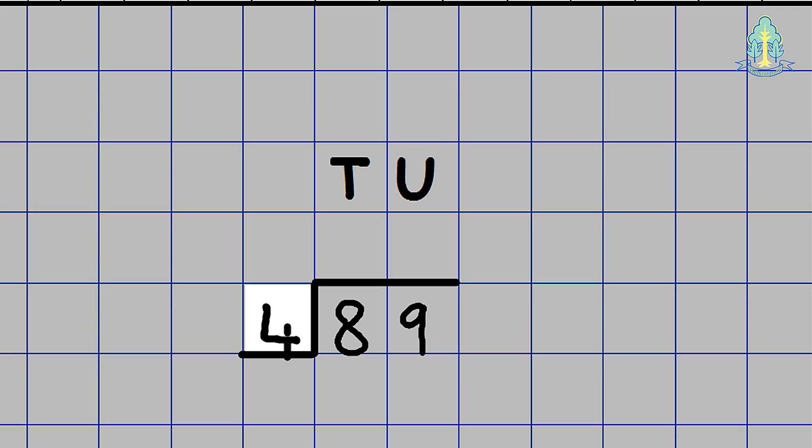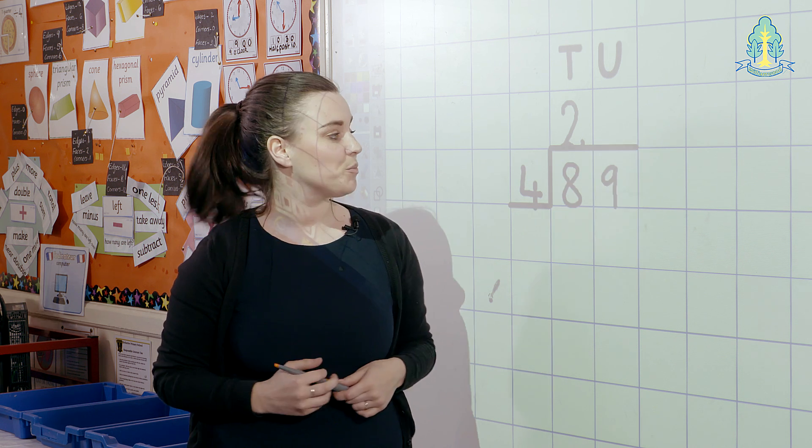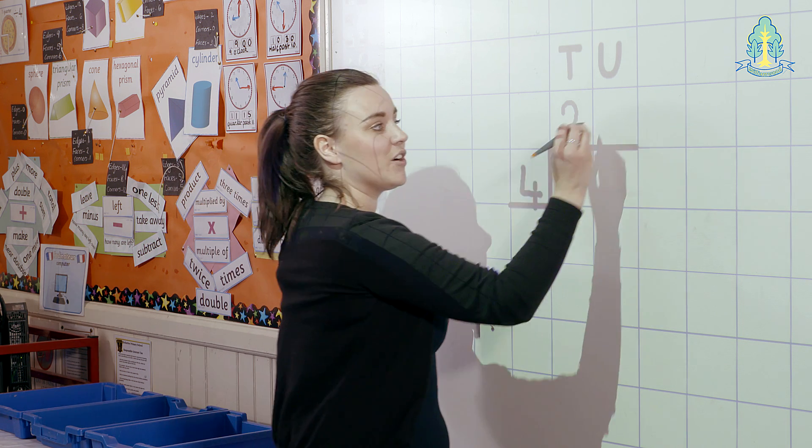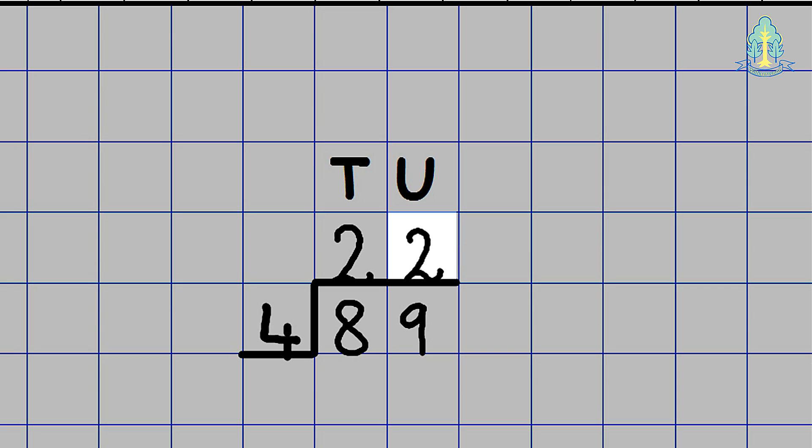We would say how many 4's are in 8? The answer is 2 which sits on the line and in the tens column. We would then say how many 4's are in 9? The children would reply there are 2 but with 1 left over. We would write the answer of 2 on the line in the units column. We would add an R for remainder on the line and the one which is left over would sit outside the calculation. Therefore 89 divided by 4 gives us the answer of 22 remainder 1.